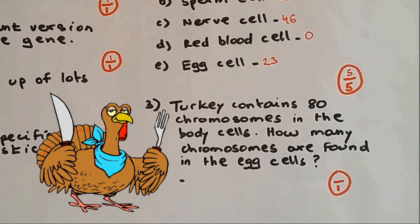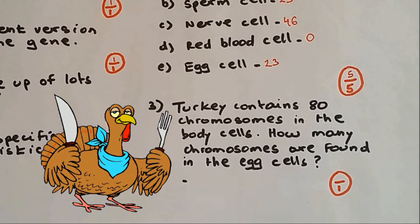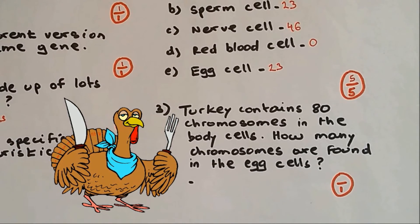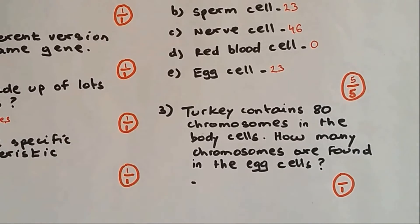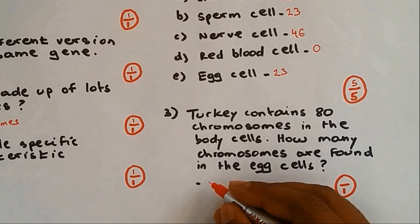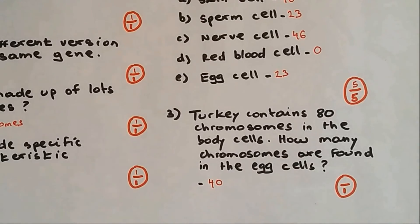How many chromosomes are found in the egg cells? An egg cell, which is a gamete, contains half the number of chromosomes as the body cells. So what's half of 80? So 40 chromosomes is the answer.